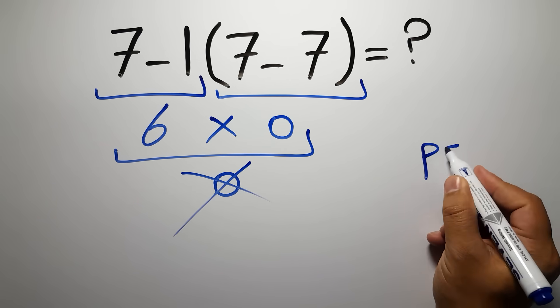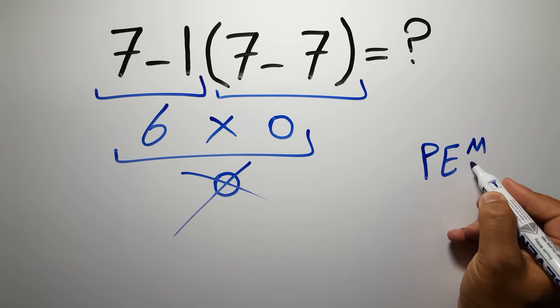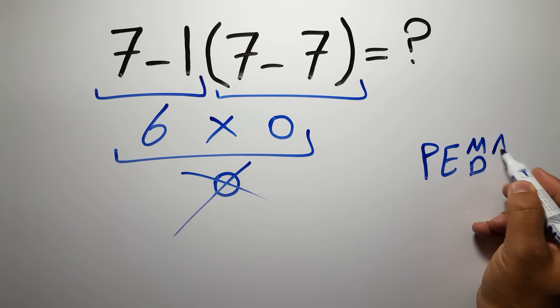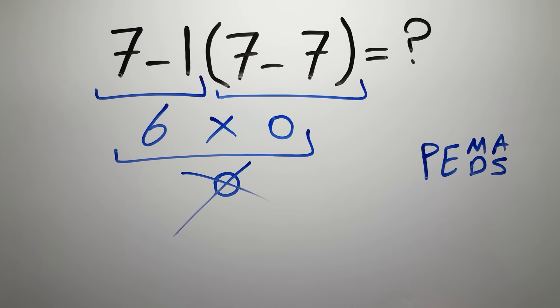...do parentheses, then exponents, then multiplication or division, and finally addition or subtraction. Remember that multiplication and division have equal priority and we have to work from left to right, and the same applies to addition and subtraction.